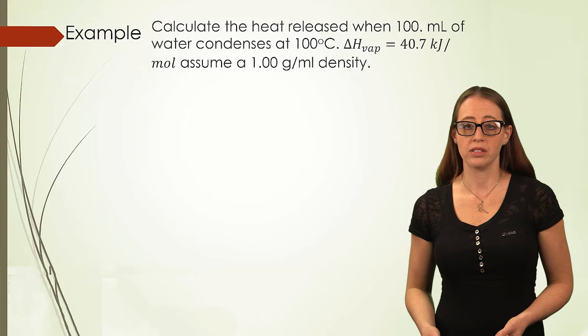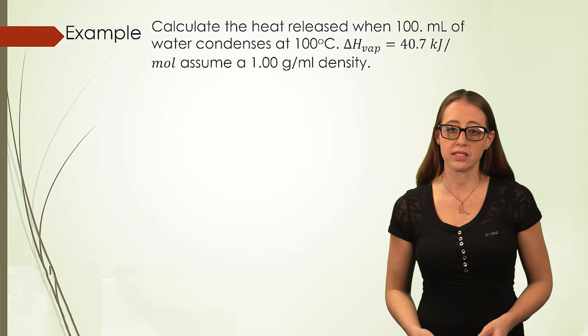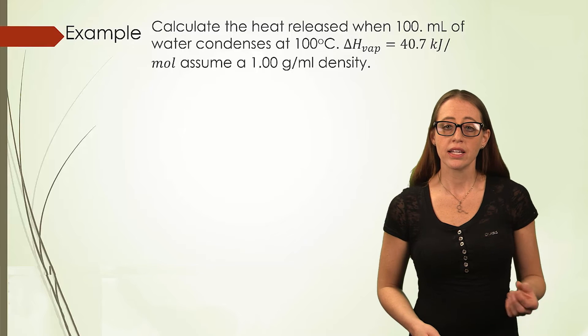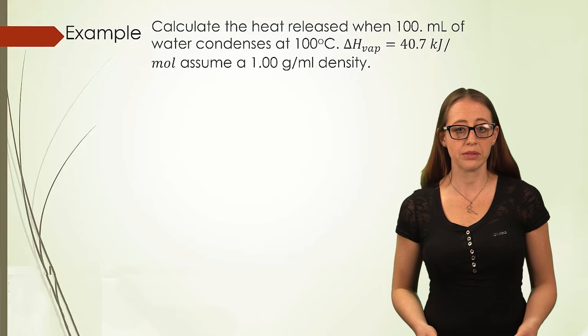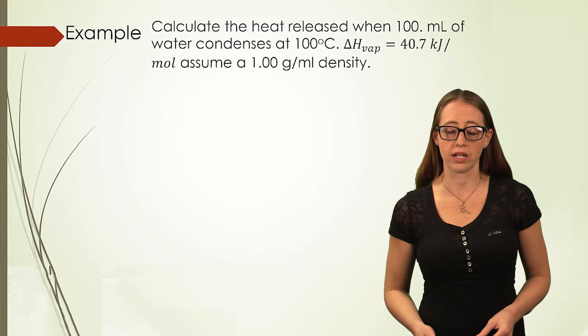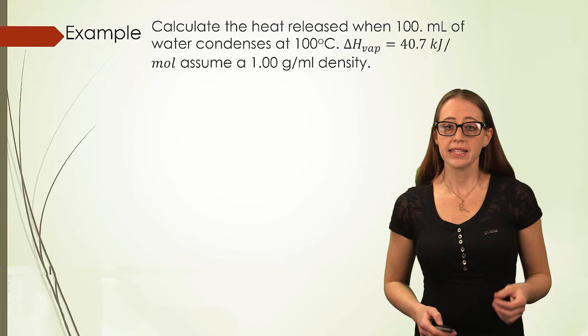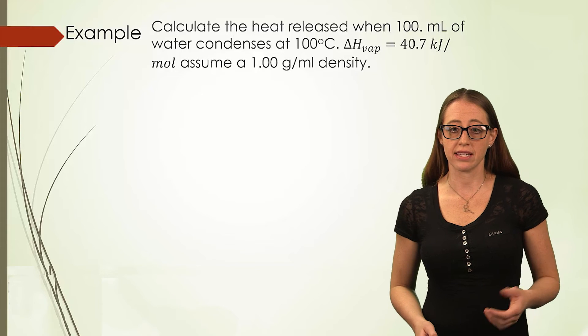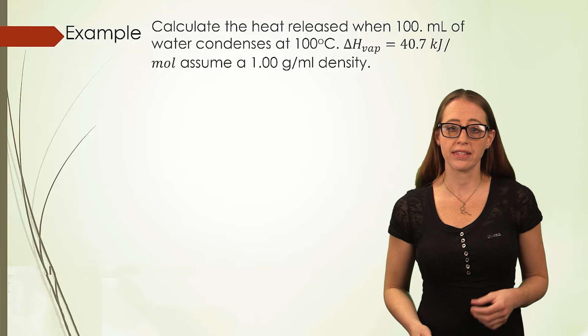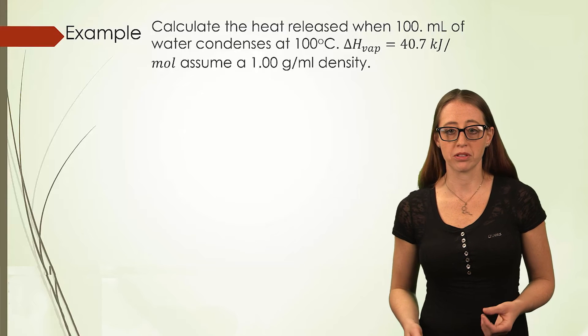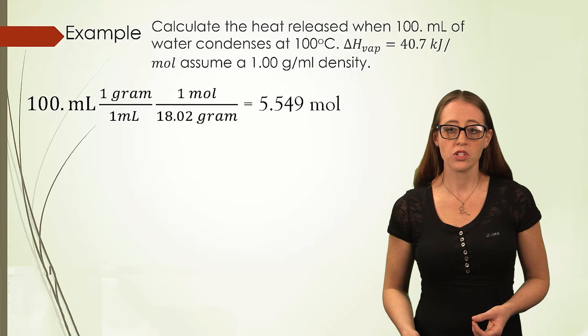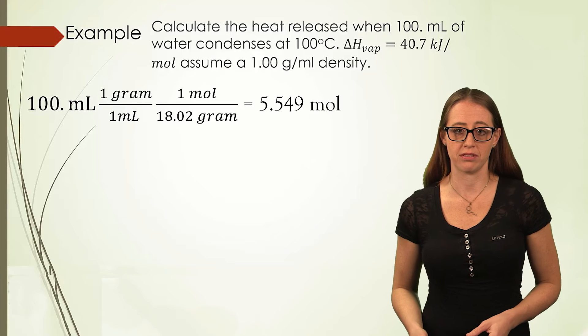Now let's do an example using these heats of fusion and heats of vaporization. Here we are going to calculate the heat released when 100 mL of water condenses at 100 degrees Celsius. The delta H of vaporization is given in the problem. We need to multiply the heat of vaporization by the number of moles. So first we need to find the number of moles.